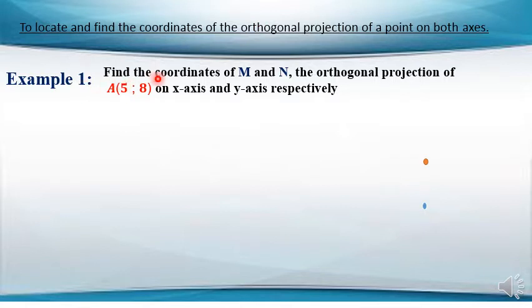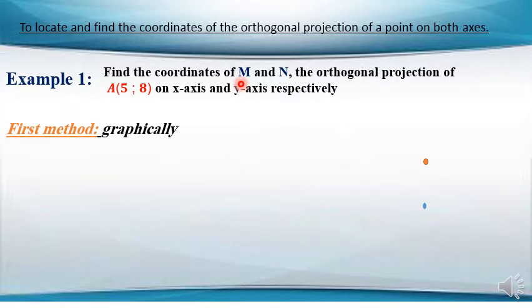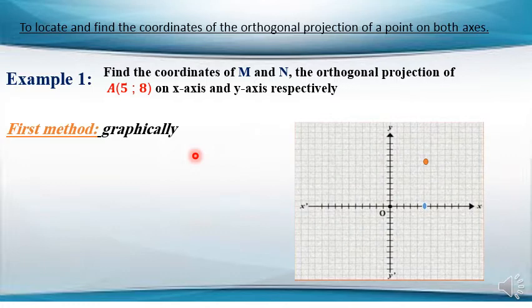Example 1: Find the coordinates of M and N, the orthogonal projections of A(5, 8) on the x-axis and y-axis respectively. So, I want to find the orthogonal projection of A on the x-axis and the orthogonal projection of A on the y-axis. Let's learn how to find the orthogonal projection, starting with the first method: graphically, on the graph.